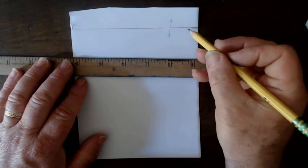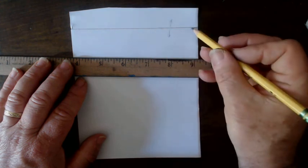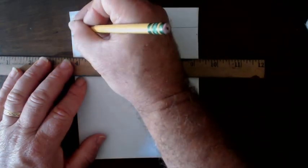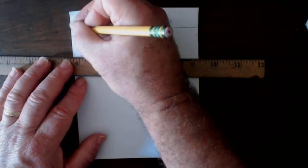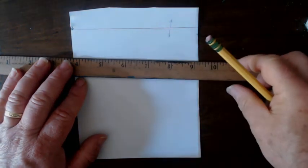Alright, I'll also need a vanishing point somewhere on this horizon line, and for today I'm going to put mine all the way over to the left. Next, I need to draw a bubble letter V.